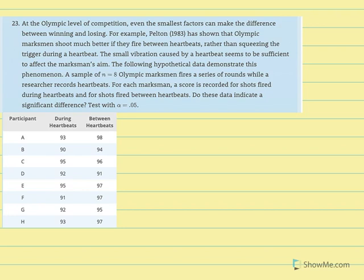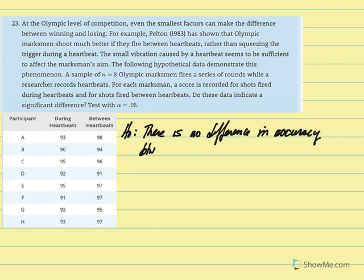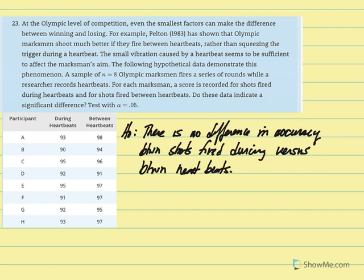So let's articulate our null and research hypothesis. The null hypothesis is going to say there is no difference in accuracy between shots fired during versus between heartbeats. And the notation would read that mu difference is equal to zero.